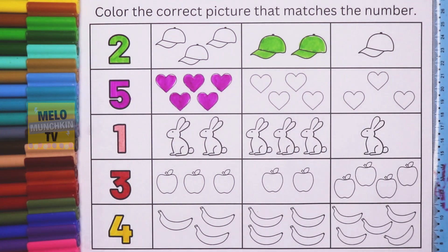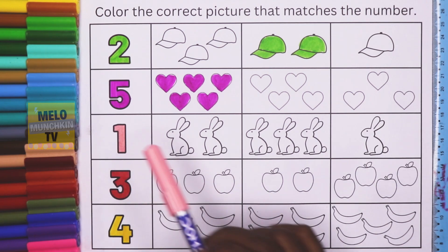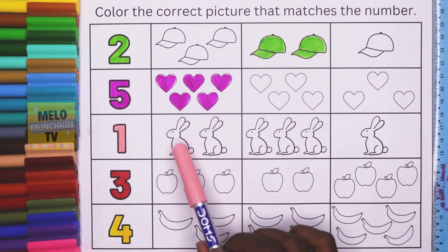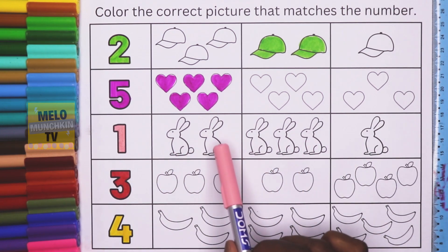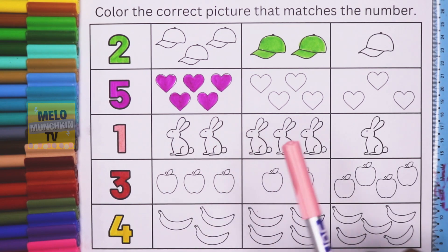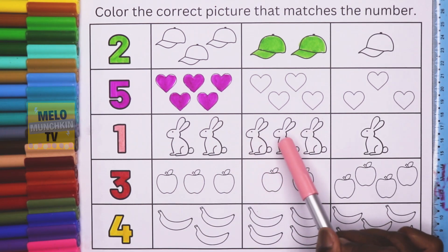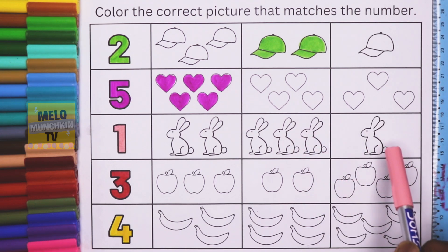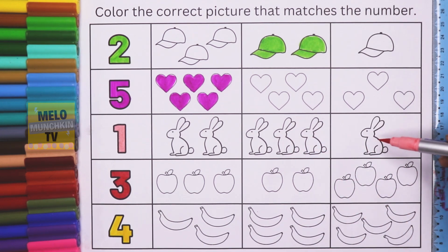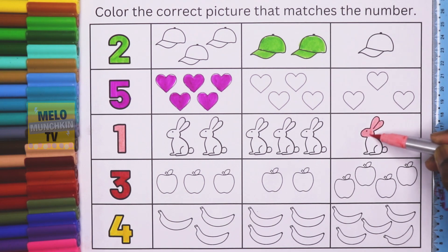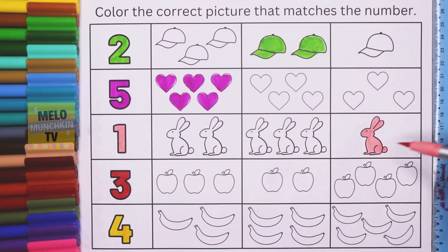The next number is 1. I need to find one rabbit. In the first box there are 2 rabbits, in the second box there are 3, and in the last box there is only 1. So this is the correct box and I'll color it.